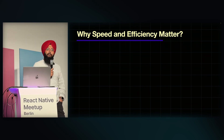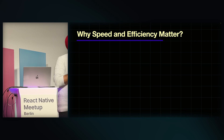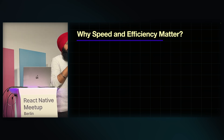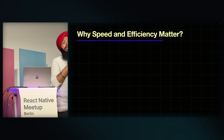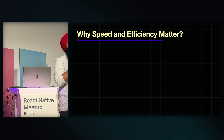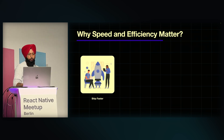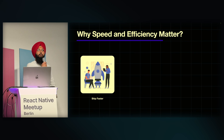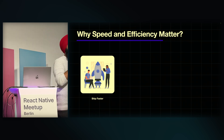So why do speed and efficiency matter? If you're building a production-based application and your client requires it to be built in one month, across all platforms, what will you do? You always wonder why, with so many resources, the product isn't shipping faster. It's because the underlying frameworks don't always make that possible. So if the frameworks aren't compatible enough, we need to work smarter.